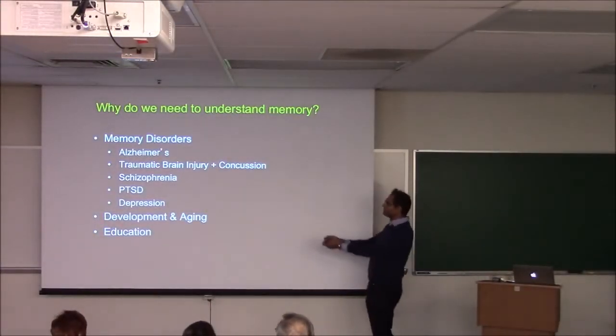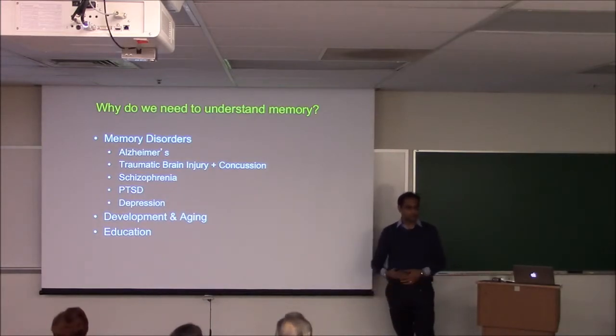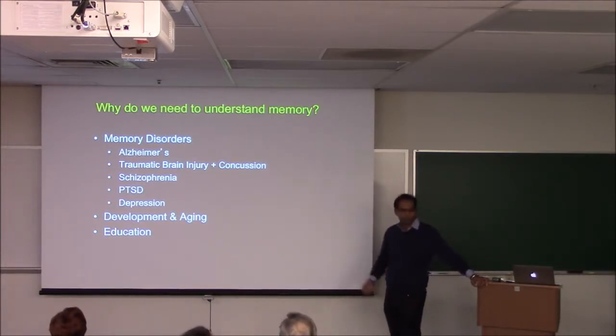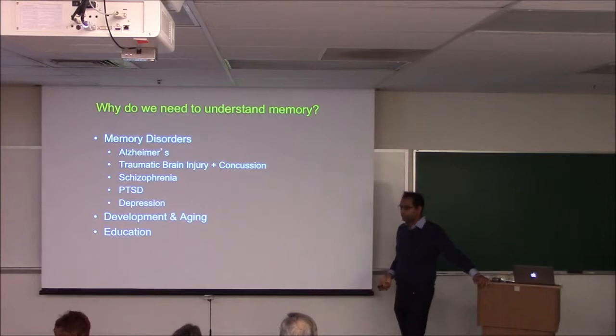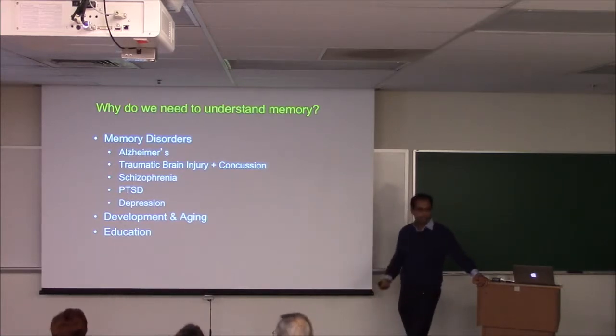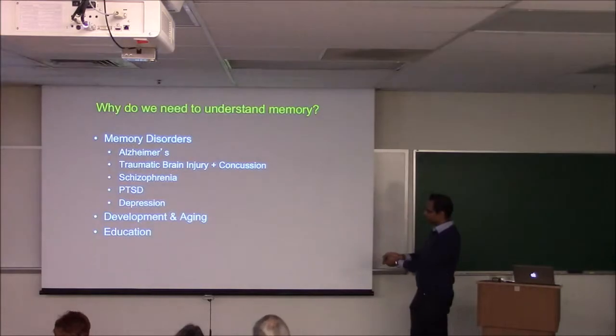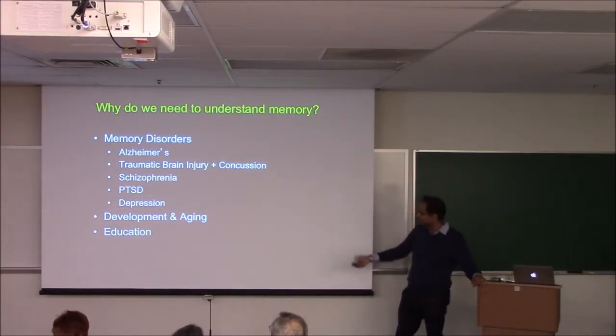Why do we need to understand memory? Obviously, many people think of Alzheimer's disease first. Almost everyone in this room probably knows someone who has Alzheimer's. But it's not just that. We're all hearing about traumatic brain injury, especially in the NFL, recovering soldiers from the Gulf War. Schizophrenia, PTSD is a memory disorder - it's a memory that can't go away, a disorder of persistence. Depression also massively affects memory.